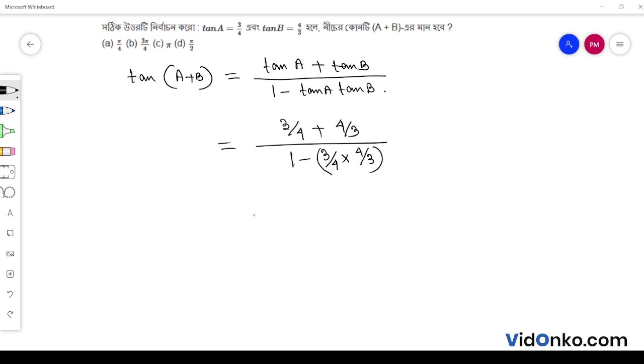This is equal to 1. The numerator is 3 by 4 plus 4 by 3, and the denominator becomes 0. Tan a plus b is undefined. Therefore,